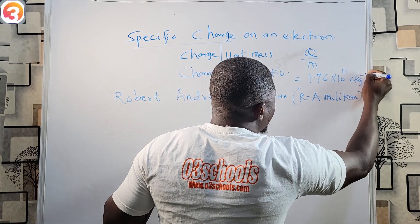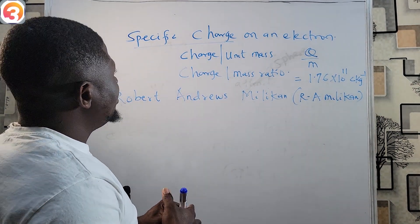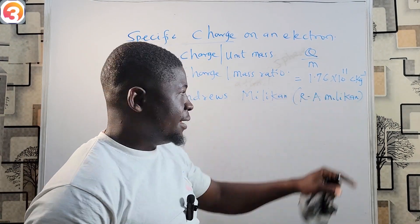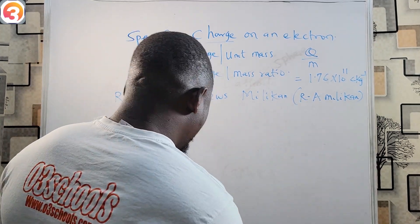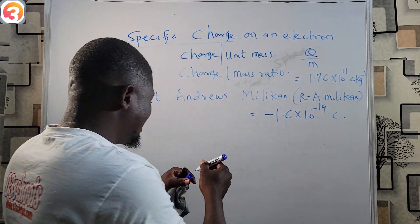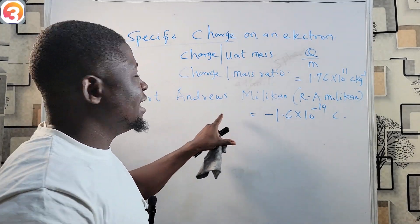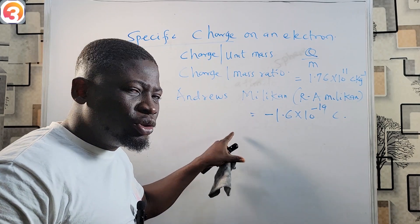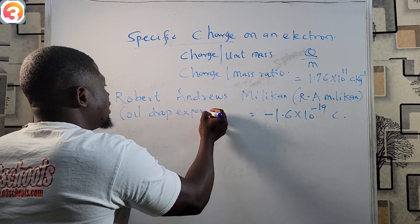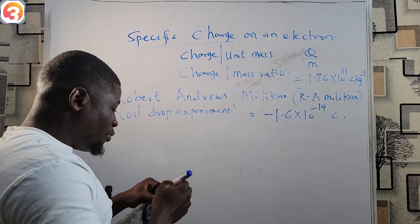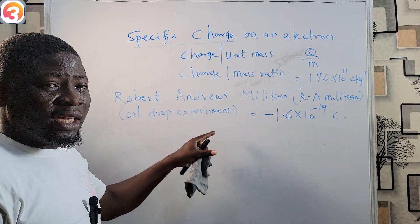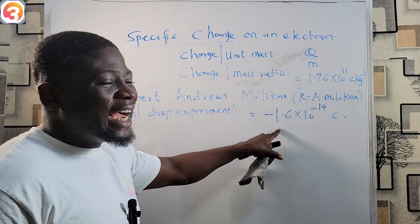JJ Thompson got the value of the specific charge on an electron to be 1.76 × 10¹¹ C/kg. Robert Andrews Millikan discovered the charge on an electron to be −1.6 × 10⁻¹⁹ coulombs. That is the charge on an electron, discovered by Robert Andrews Millikan through his famous oil drop experiment — a very common exam question.